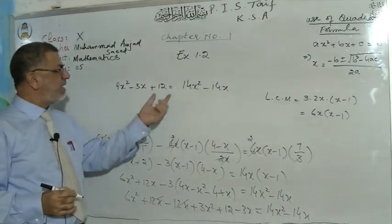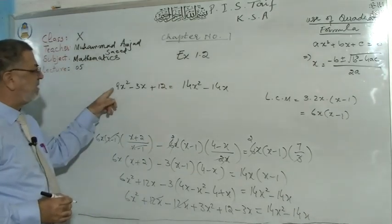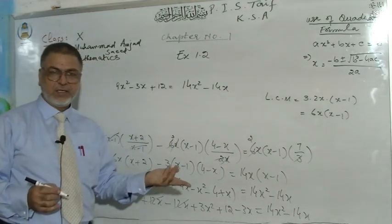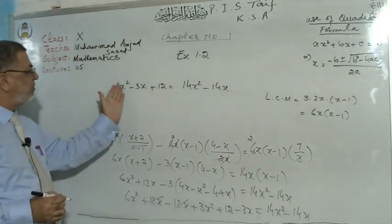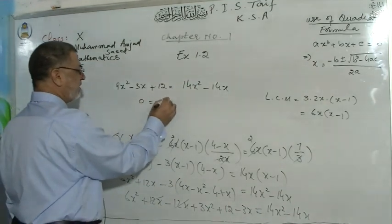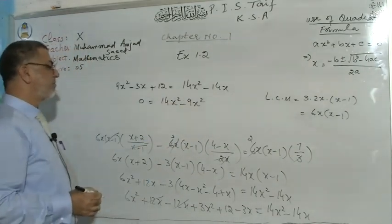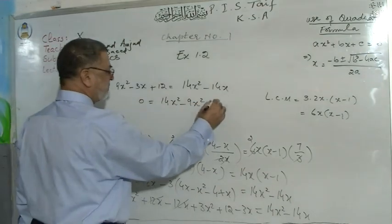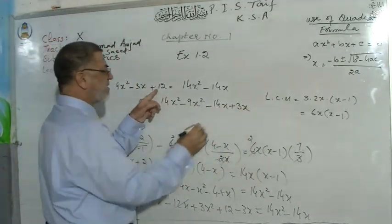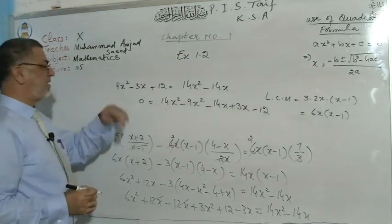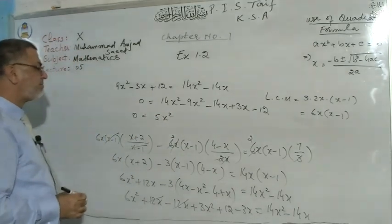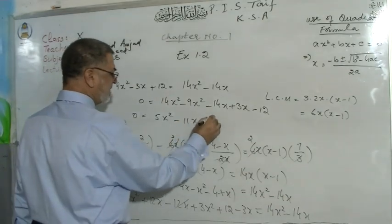Dear students, on the right-hand side 14x² is positive, and on the left we have 9x² which is also positive. If you bring 14x² to the left it becomes negative. It is better to bring the left-hand side to the right. So: 14x² − 9x² = 5x², then −14x with +3x gives −11x, and +12 becomes −12 on the other side. So 0 = 5x² − 11x − 12.